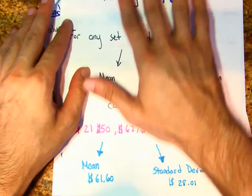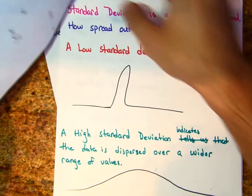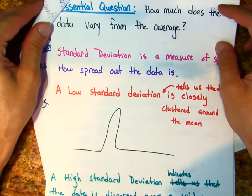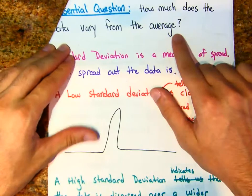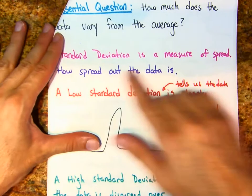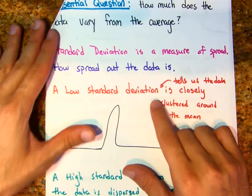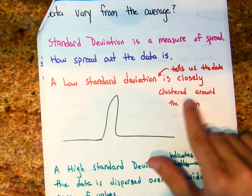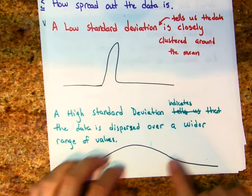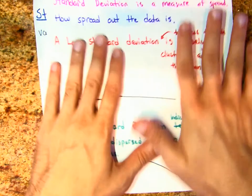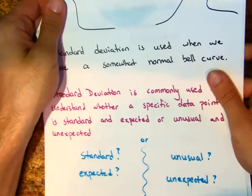The essential question is: how much does the data vary from the average, or the mean? Standard deviation is a measure of spread — how spread out the data is. A low standard deviation tells us the data is closely clustered around the mean. A high standard deviation indicates that the data is dispersed over a wider range of values.